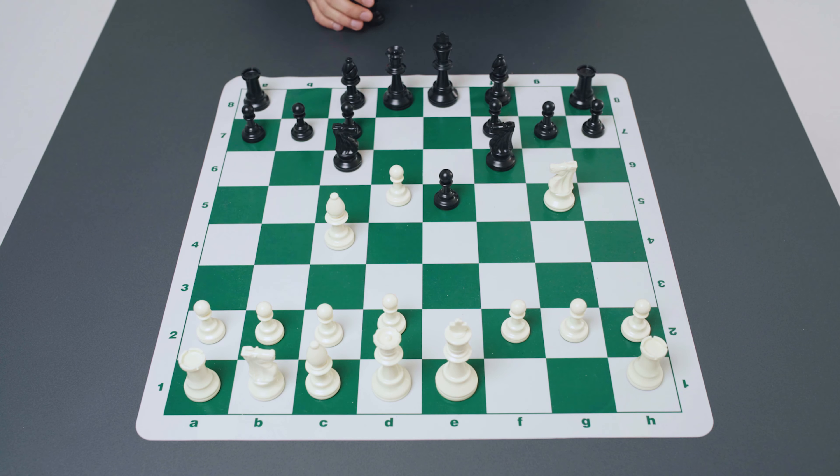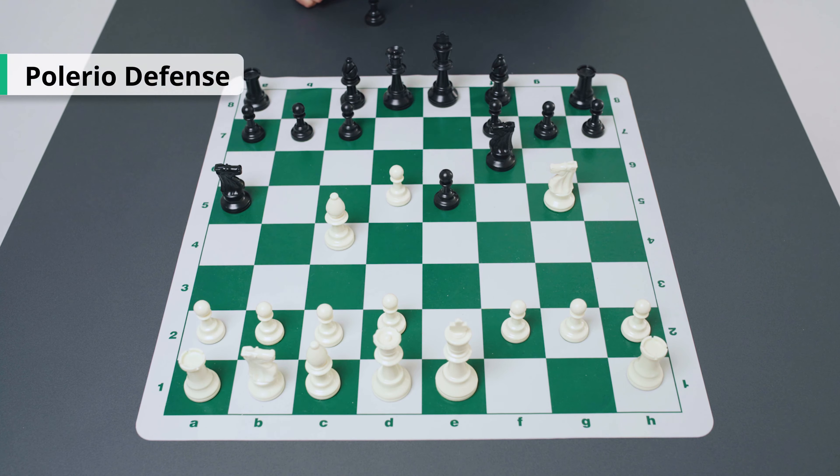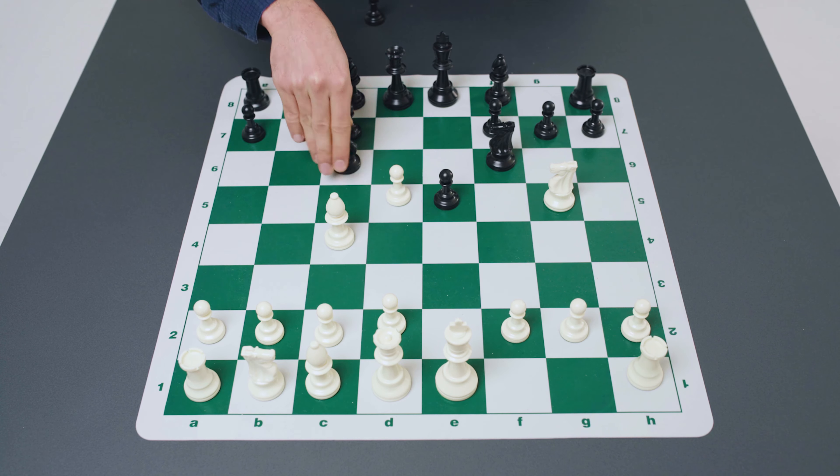In the variations after bishop to c5, this is not the case because the queen controls this diagonal. Therefore after knight f6 we will look at this possibility knight to g5 striking at this weak point on f7. This is the so-called knight attack.